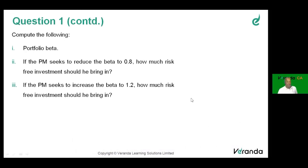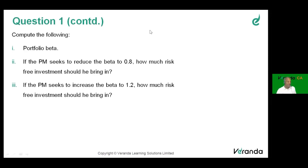The problem is about portfolio beta. In the second case the portfolio beta is expected to be greater than 0.8, and in the third case the portfolio manager seeks to increase the beta to 1.2, meaning the portfolio beta is expected to be between 0.8 and 1.2.